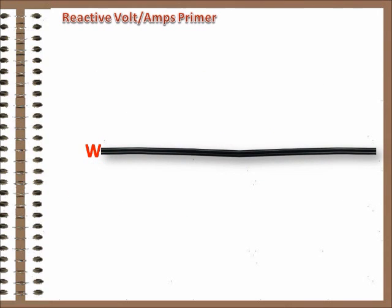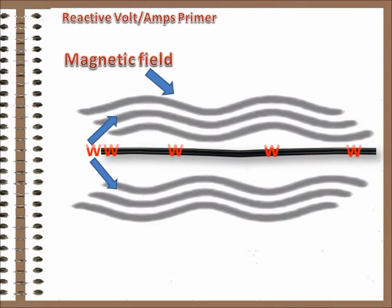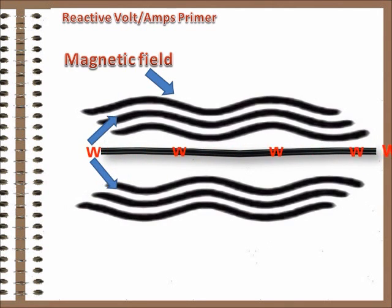It takes energy to create that magnetic field around the wire. So when current starts to flow in a circuit, part of the energy that went into that circuit goes into creating the magnetic field, instead of showing up as watts. Part of the energy is dispersed into heat, too.